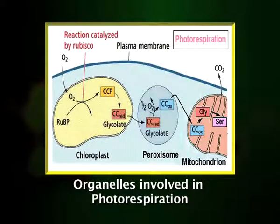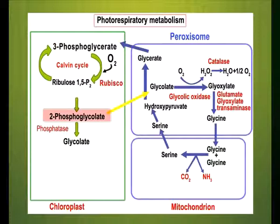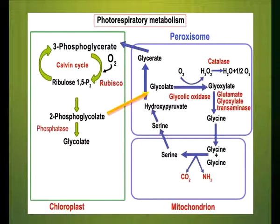The process of photorespiration involves the involvement of chloroplasts, peroxisomes, and mitochondria. RuBP is oxidized by RuBP oxygenase to one molecule of 3-phosphoglyceric acid and another molecule of 2-phosphoglycolic acid. The 2-phosphoglycolic acid is dephosphorylated to glycolic acid by the enzyme phosphatase. The glycolic acid is then transported to the peroxisomes, where it reacts with oxygen to form glyoxylic acid and hydrogen peroxide with the help of the enzyme glycolic oxidase. Hydrogen peroxide (H₂O₂) is then destroyed by the enzyme catalase.